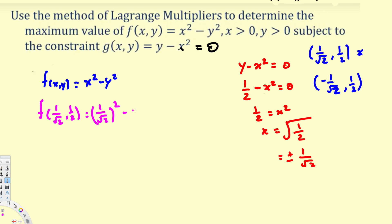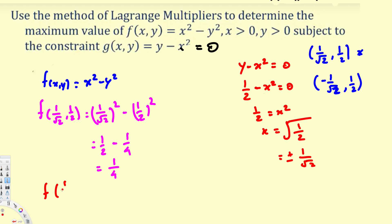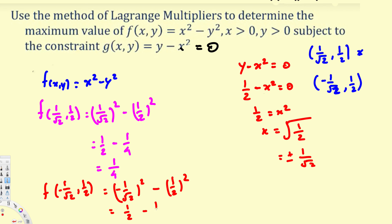For the first point: (1/√2)² minus (1/2)² equals 1/2 minus 1/4 equals 2/4 minus 1/4, which gives 1/4. For the second point (−1/√2, 1/2): (−1/√2)² minus (1/2)² also equals 1/2 minus 1/4, giving the same value of 1/4. Both points give equal values.